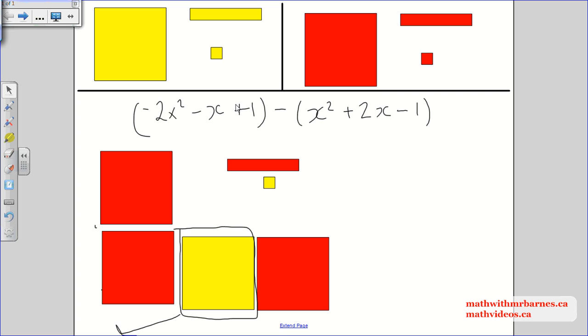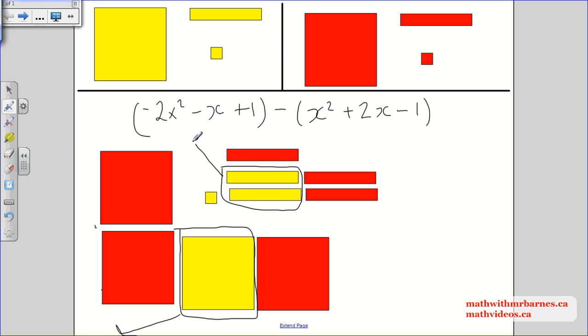Now, I have to subtract a positive 2x. Well, I don't have positive 2x here, so I need a positive 2x. So I bring it down, and then I have to make my zero pair. So here's my zero pair. So now I can subtract my positive 2x. That's gone.